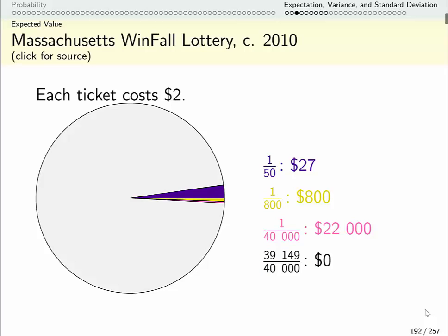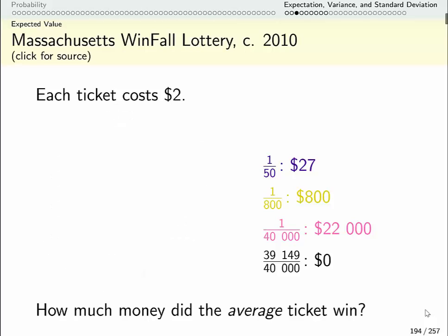So again I don't know how many tickets we have, maybe there's a million maybe there's 40,000, but I can still try and figure out if there were a whole bunch of tickets what would the average ticket win. And I do the computation the same way.